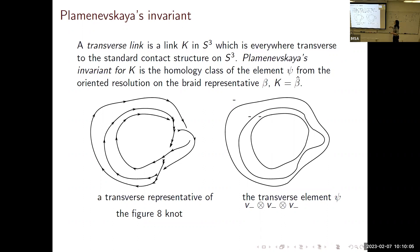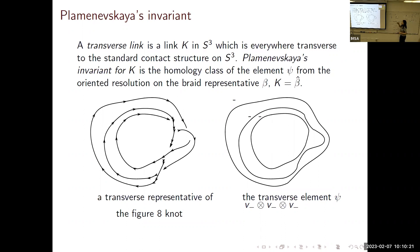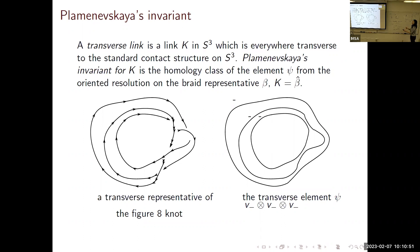Quick definition: a transverse link is a link which is everywhere transverse to the standard contact structure. The Plamenevskaya invariant is a homology class discovered to be invariant under transverse isotopy. You take the oriented resolution of your braid—a closed braid naturally gives a transverse link—and consider the homology class of that specific element inside Khovanov homology. It turns out that specific homology class is a transverse isotopy invariant. The fractional Dehn twist coefficient, roughly speaking, is how many times there are full twists in a specific direction.